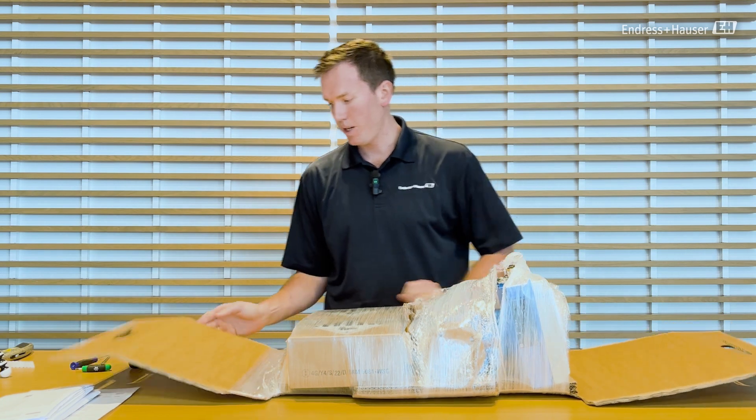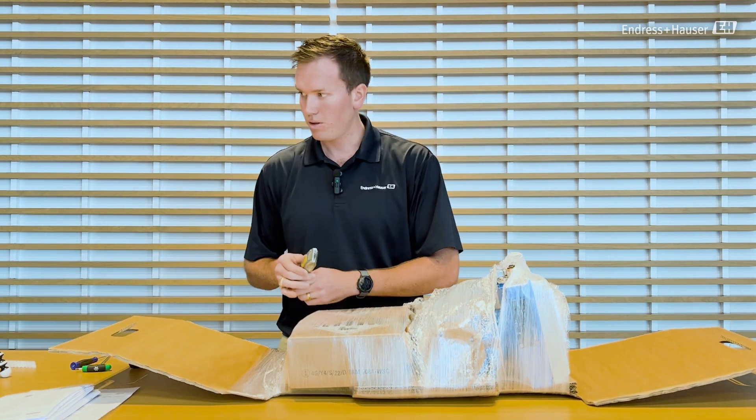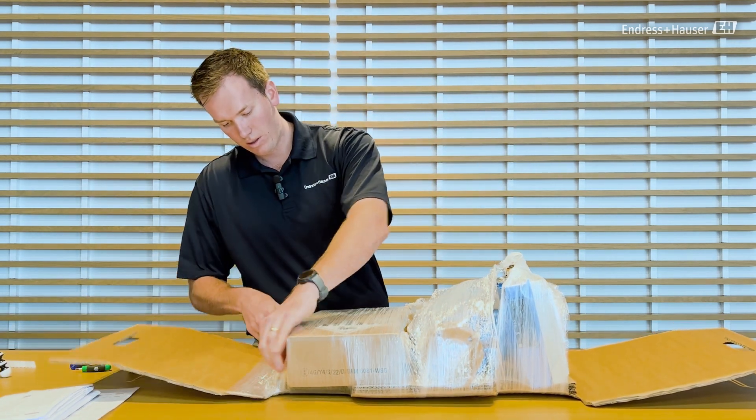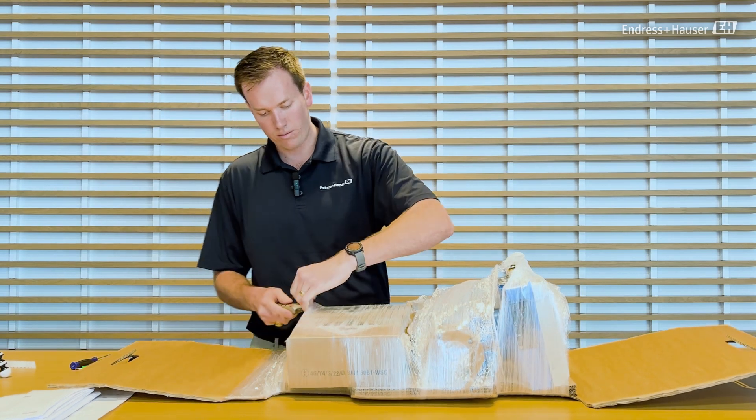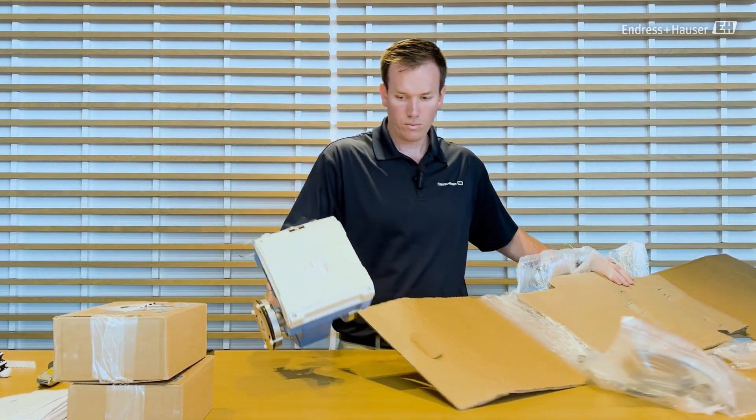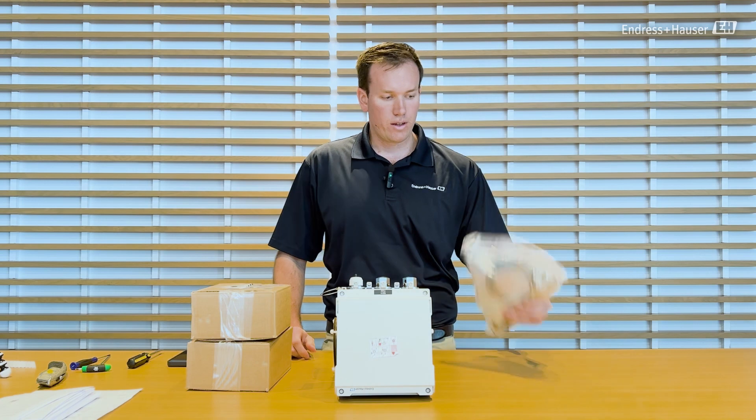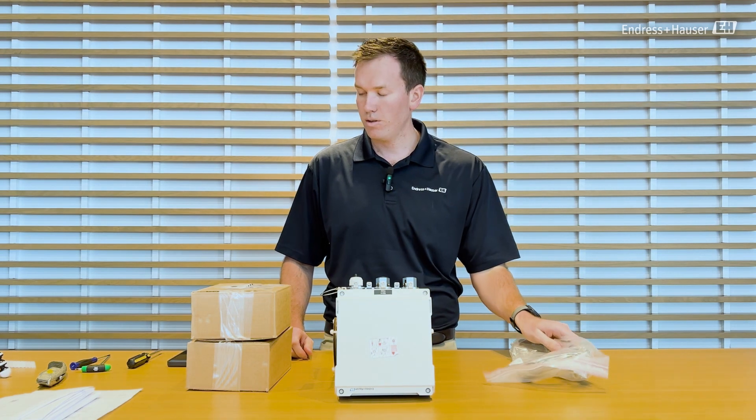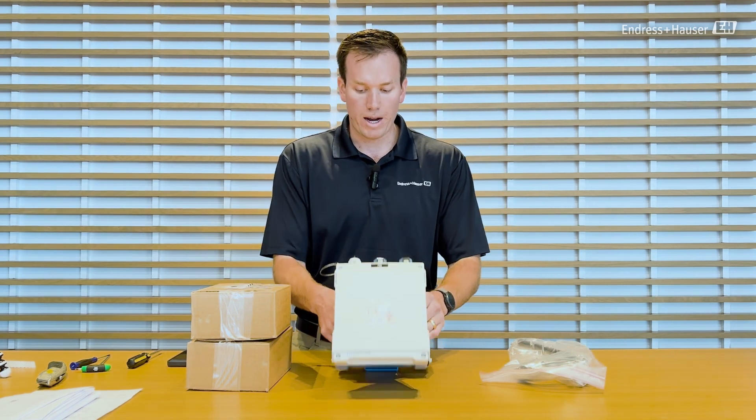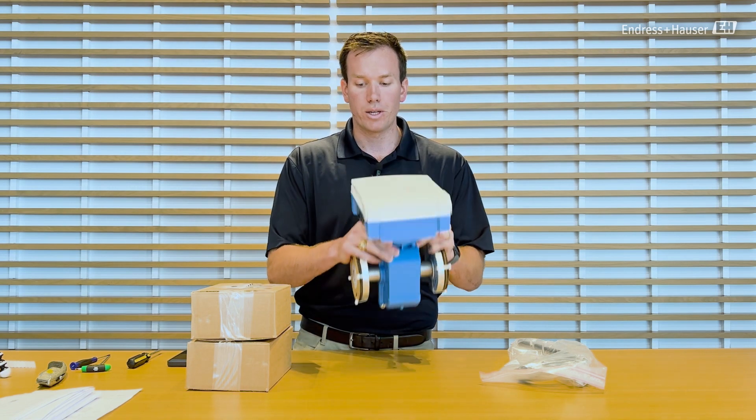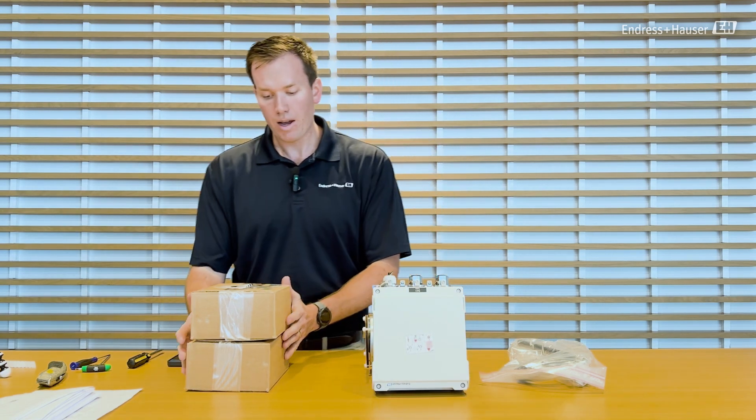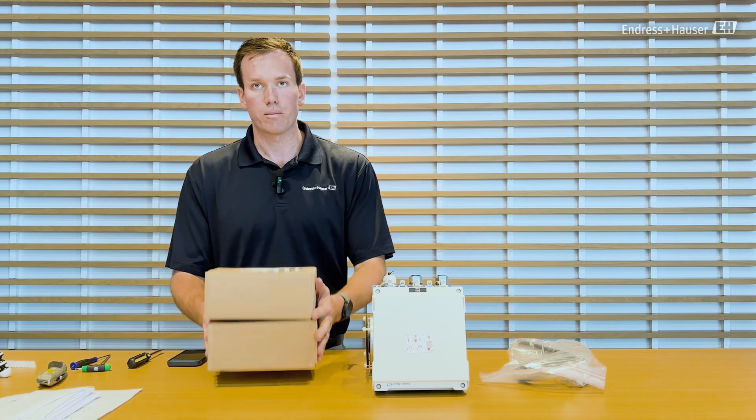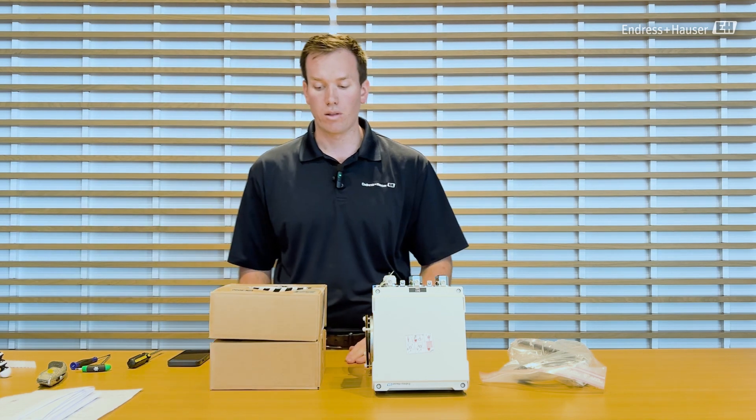This insert in the box comes out to make it easier to remove the meter. So I'm going to finish cutting away the plastic. All right, you have your antenna for your cellular communication, you have the Promag W800 flow meter itself, and then you have your batteries for your Promag meter. They ship separately. These are lithium batteries.